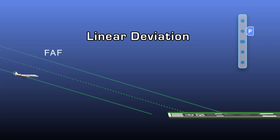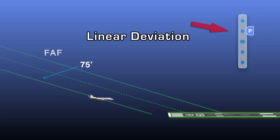To explain further, on an approach using linear deviation, a one-dot deviation can equal 75 feet at the final approach fix and 75 feet at the runway.